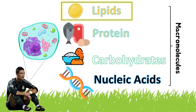What are living things made of? The smallest living thing is a cell — cells are the smallest living things that make up life. If we take it one step further and ask what cells are made of, the answer is macromolecules. Macromolecules include lipids, proteins, carbohydrates, and nucleic acids — these four things make up your cells.